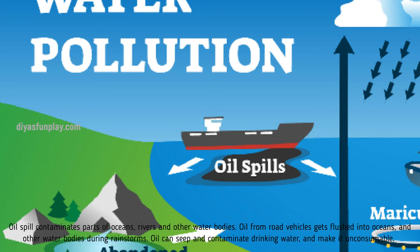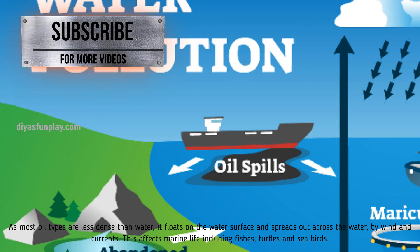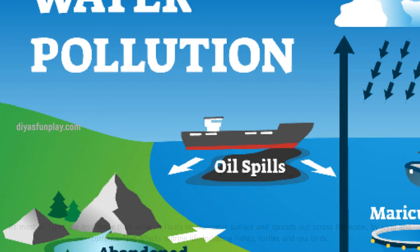Oil spill. Oil spill contaminates oceans, rivers, and other water bodies. Oil from road vehicles gets flushed into oceans and other water bodies during rainstorms. Oil can seep and contaminate drinking water and make it inconsumable. As most oil types are less dense than water, it floats on the water surface and spreads out across the water by wind and currents. This affects marine life, including fishes, turtles, and seabirds.